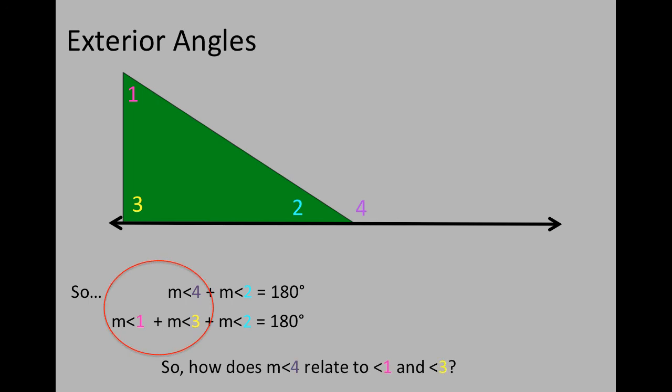I want you to do a little bit of deduction here and ask yourself the question, how does the measure of angle 4 relate to the angle measures of 1 and 3 together?